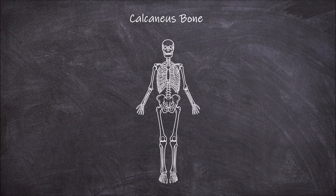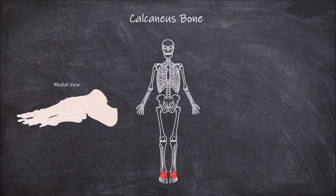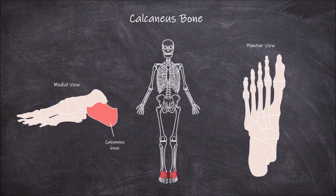The calcaneus bone is located at the back of each foot and forms the heel of the foot. If we look more closely at the medial view of the right foot, we can see here highlighted in red that the calcaneus bone is located in the posterior region of the foot. If we look at the plantar view, which is also known as the sole of the foot, we can again see the calcaneus bone highlighted in red.